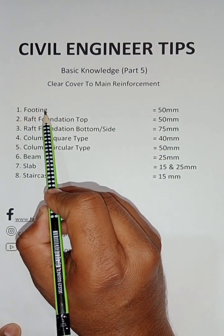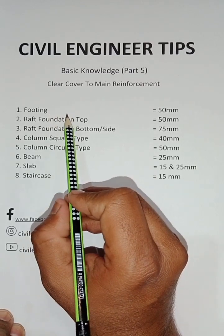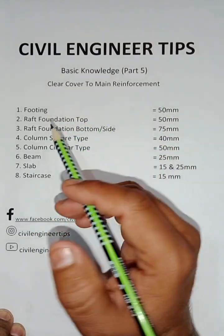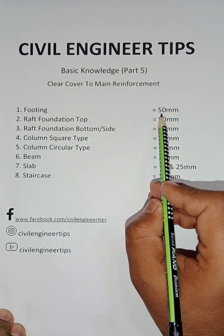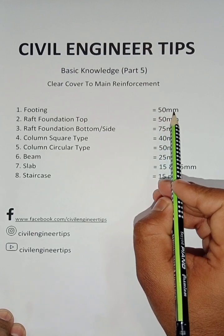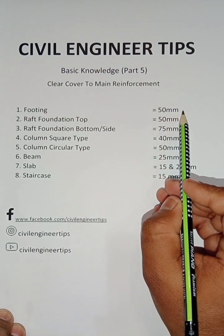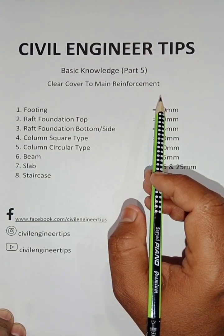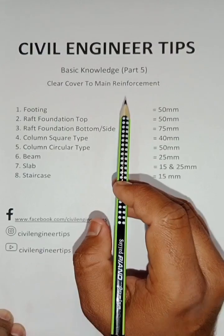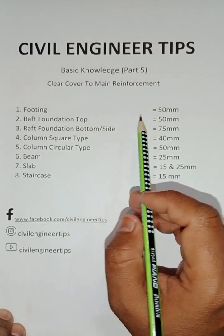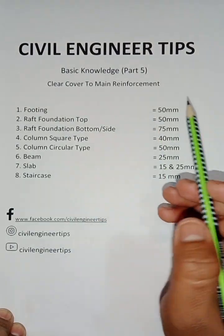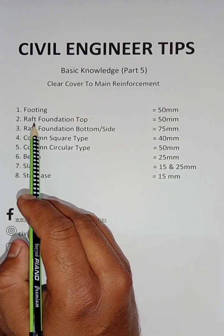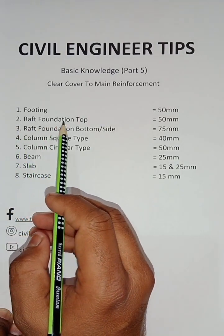The clear cover for footing should be 40 mm to 75 mm. Just remember, 40 mm is used for general footing. Number two is raft foundation top.